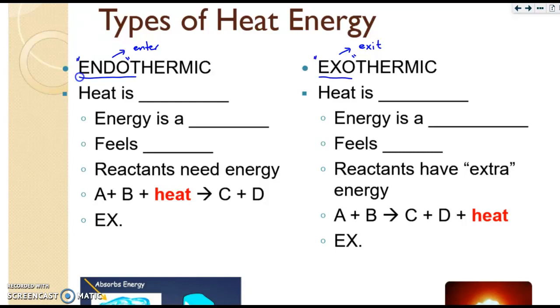In an endothermic reaction, heat is absorbed or added. In an exothermic reaction, heat is released, so it's exiting. In an endothermic reaction, energy is going to be found on the reactant side because it's being added to the reaction. And because the heat is being absorbed, the outside of the system is going to feel cold. The reactants require energy to form products, as you can see in the example.